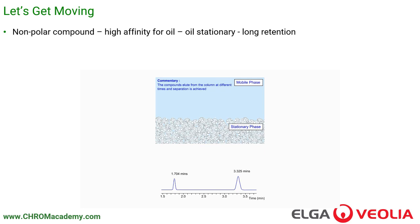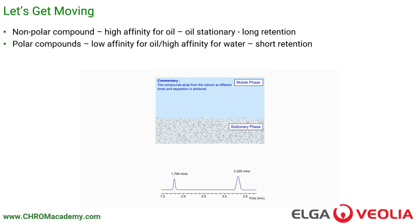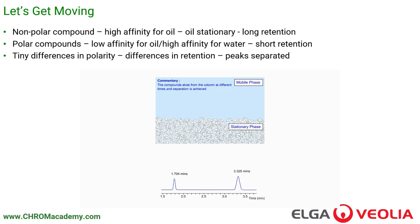Nonpolar compounds have high affinity for oil — the oil is the stationary phase — which means they have very long retention times. They take much longer to come out of the column because they spend a lot of their time not moving, a lot of their time stationary. Polar compounds have a low affinity for the oil and a very high affinity for the water mobile phase. So they spend more time in the mobile phase and come through the column more quickly — they have short retention times. We can exploit tiny differences in polarity and differences in retention time to separate substances. That's fundamentally how HPLC works.